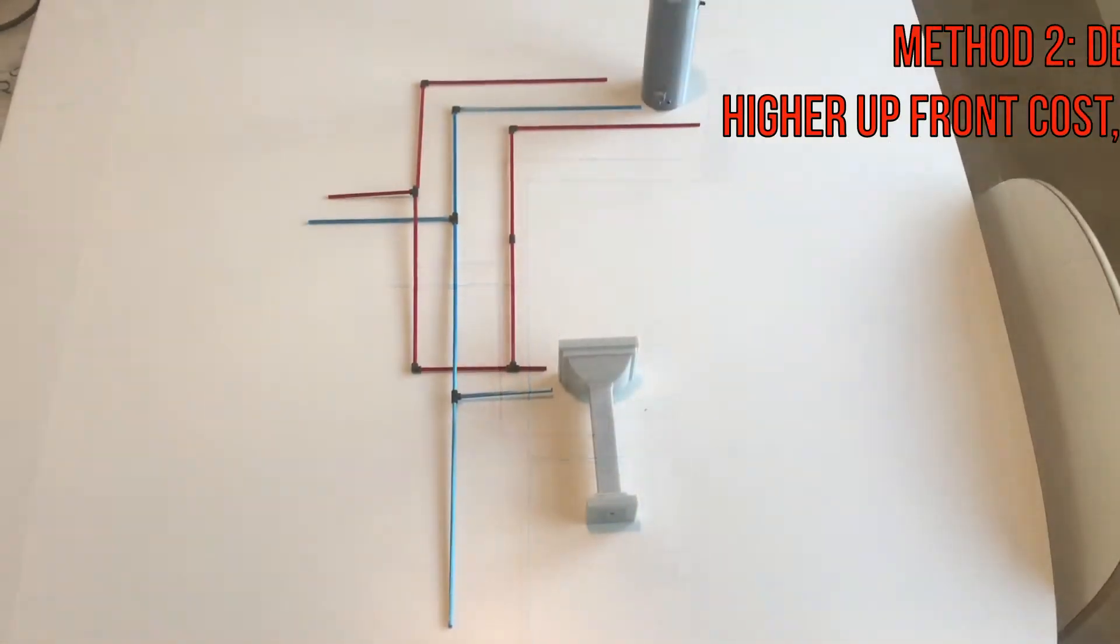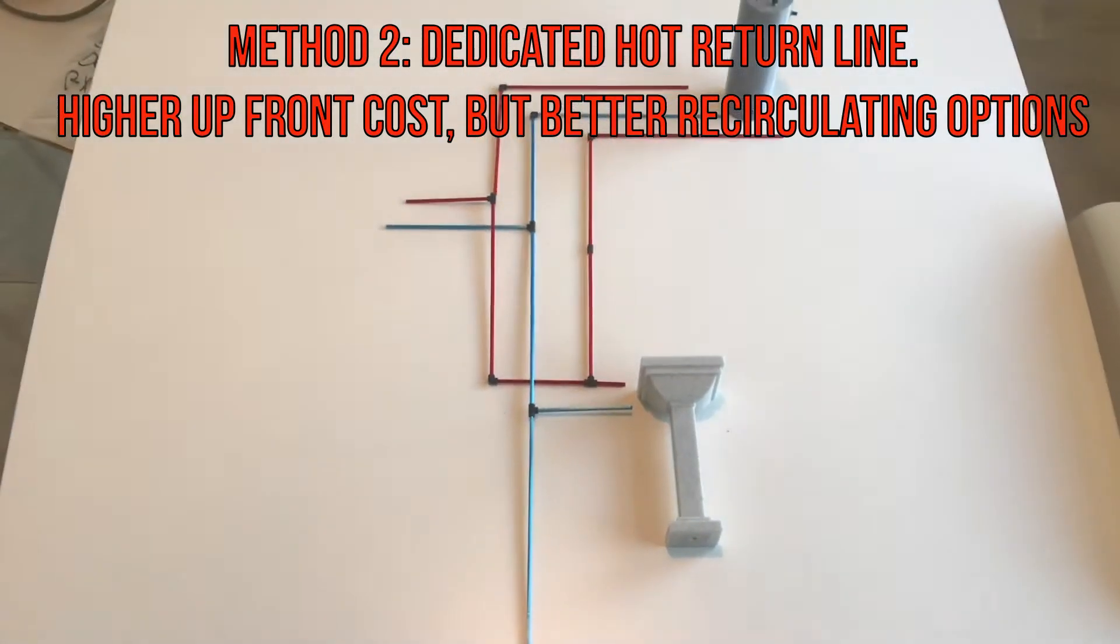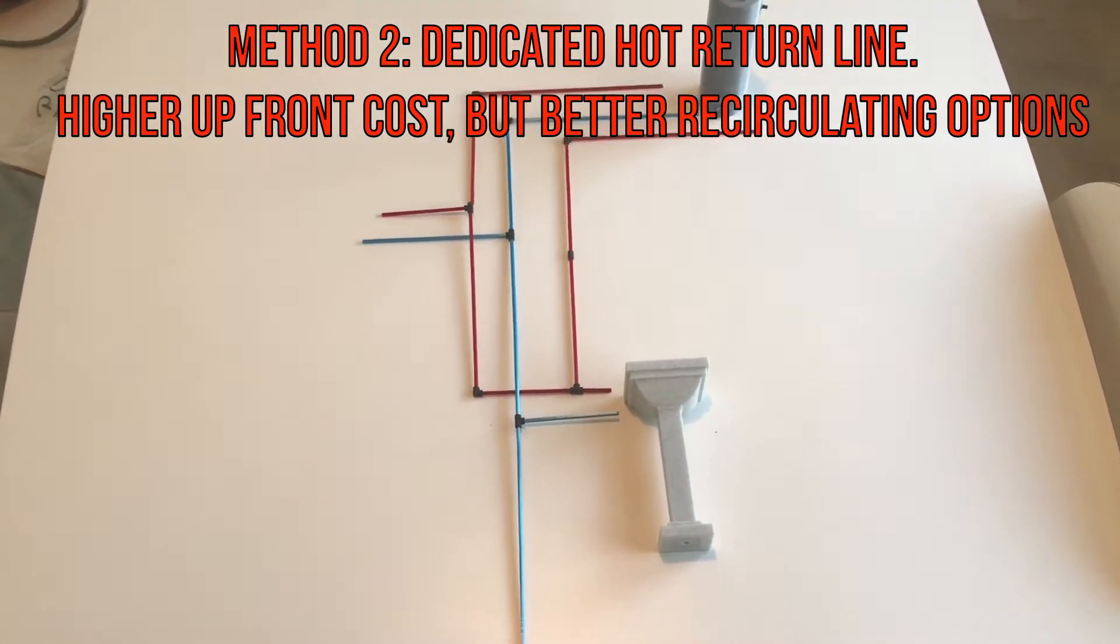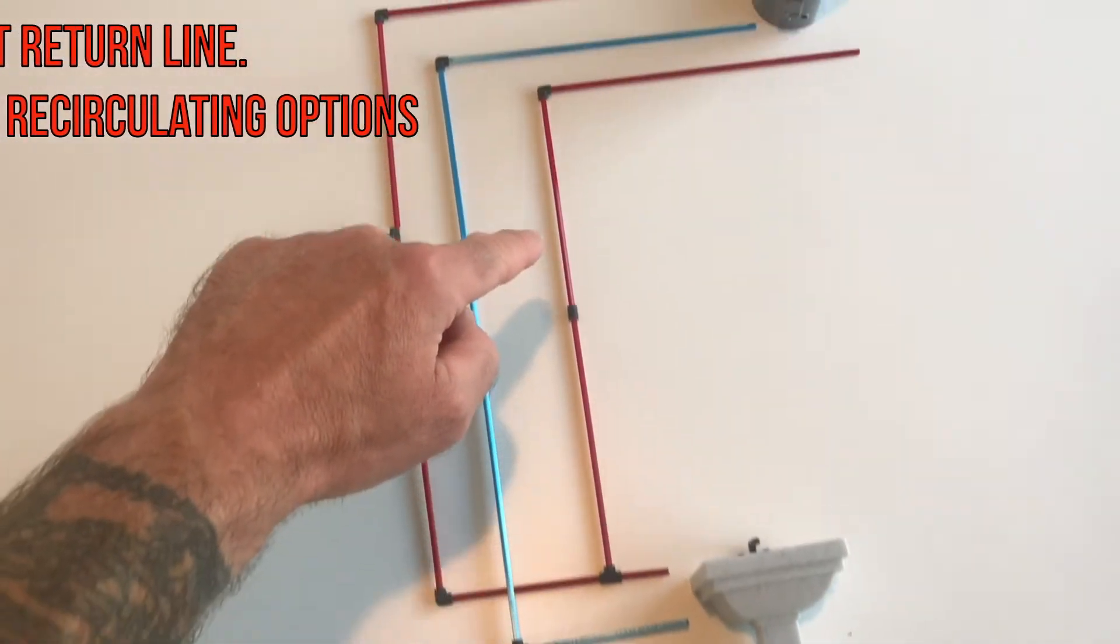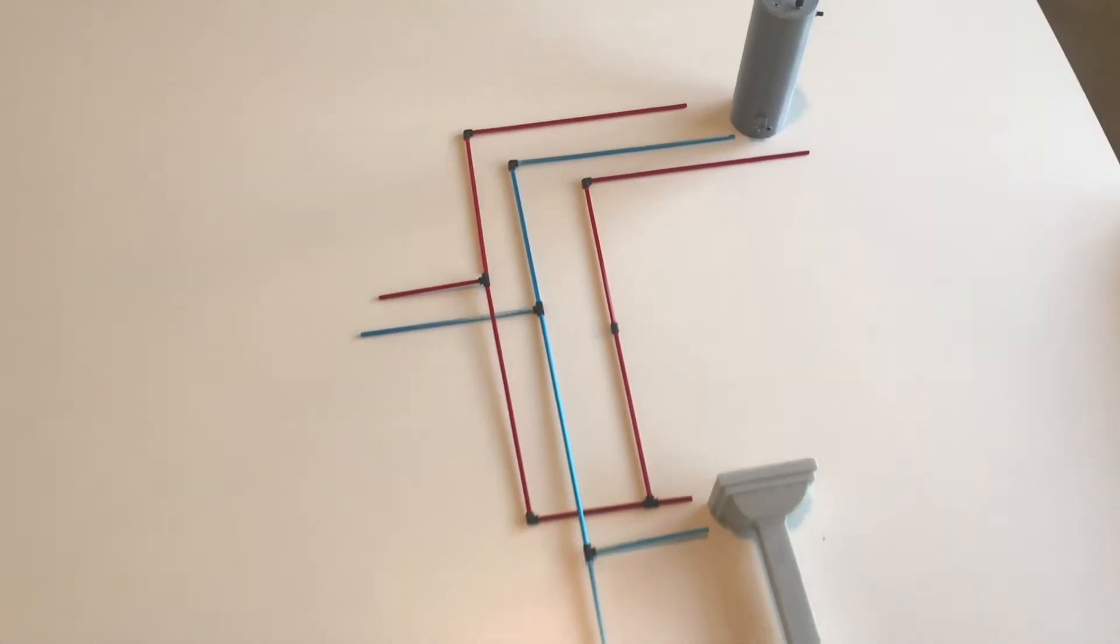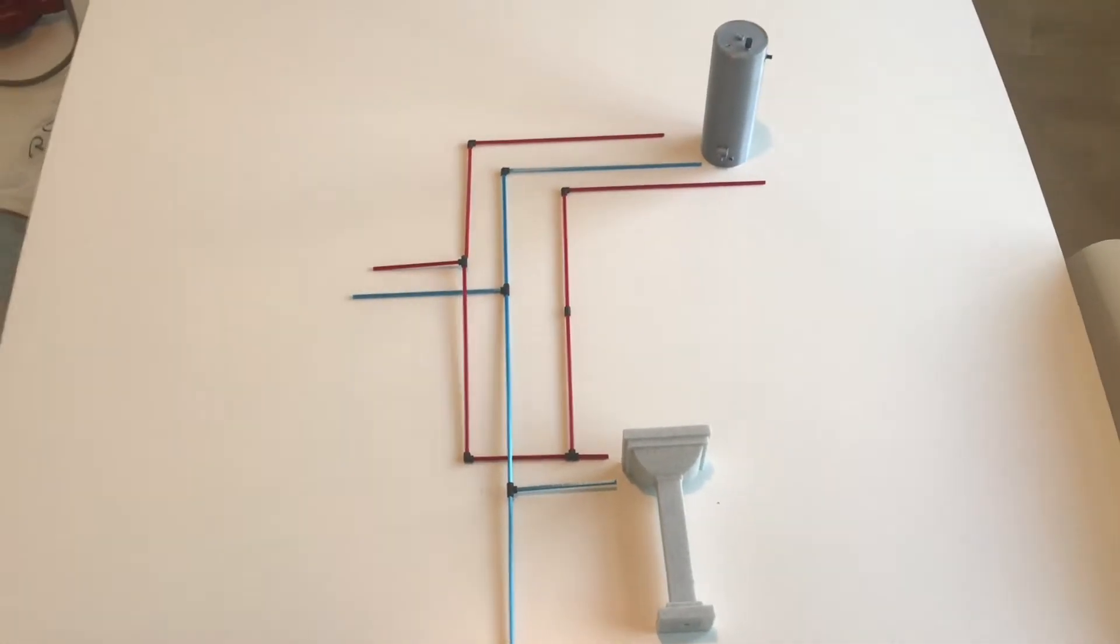If you have a traditional tank water heater and you have the opportunity to install a dedicated hot return line, which is this stretch of pipe here, this is the best method. It's my favorite method and if it's in a like a single story home and there's a crawl space and you can easily add the line it's well worth it.